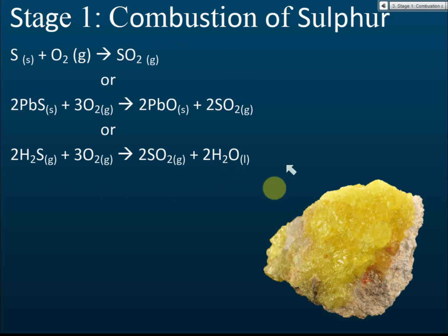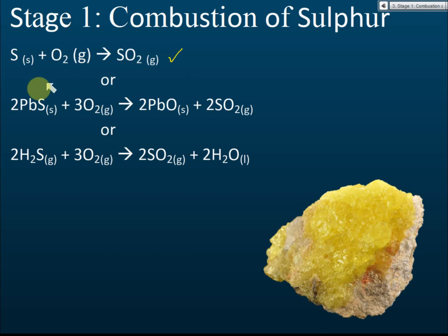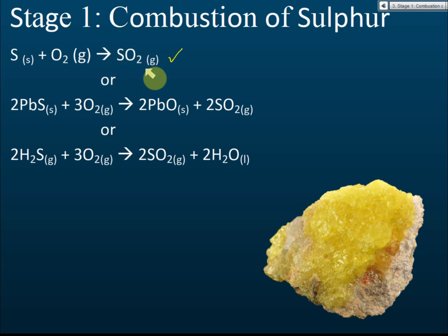Try to remember all these chemical reactions, but if you really can't, remember the first one at least — burning sulfur in oxygen. The second and third reactions are less important. In the exam, giving just the first reaction is enough. The purpose of Stage 1 is to produce sulfur dioxide by combustion of sulfur.